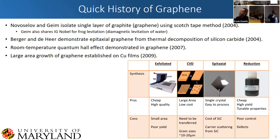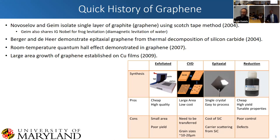Just a very quick history of graphene. Novoselov and Geim isolated a single layer of graphite — graphene — using the scotch tape method in 2004. Geim also shared the Ig Nobel Prize for making a frog levitate, due to diamagnetic levitation of water. He's the only person who has both a Nobel Prize and an Ig Nobel Prize.